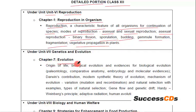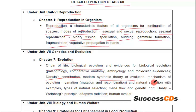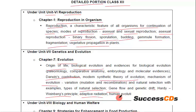From Chapter 7, Evolution: origin of life, biological evolution and evidence for biological evolution, Darwin's contribution, modern synthetic theory of evolution, mechanism of evolution, variation and natural selection with examples, types of natural selection, gene flow, genetic drift, Hardy-Weinberg's principle, adaptive radiation, and human evolution — all of this has been deleted.